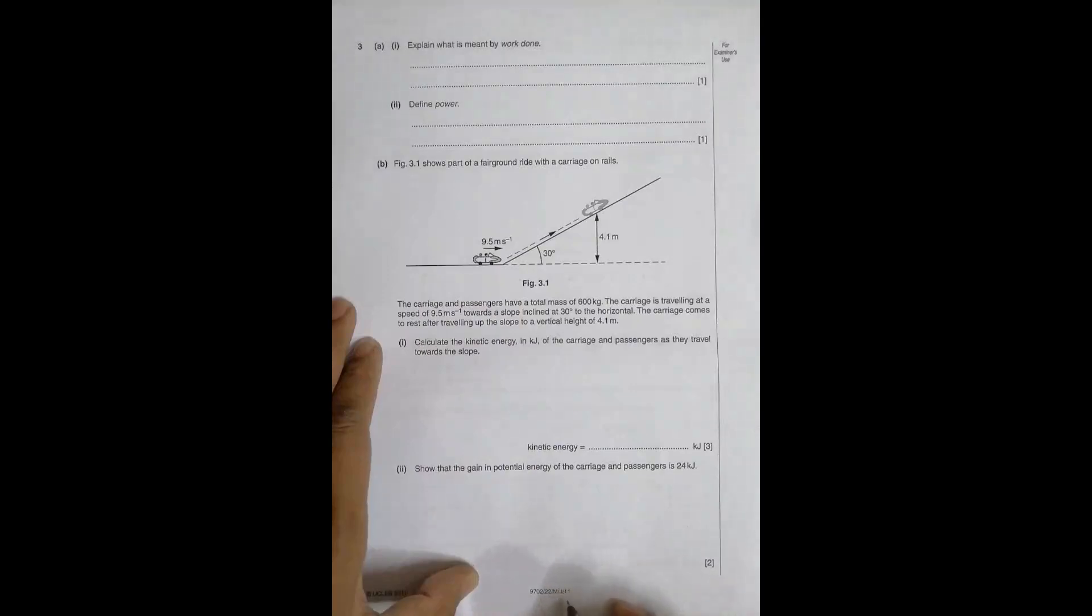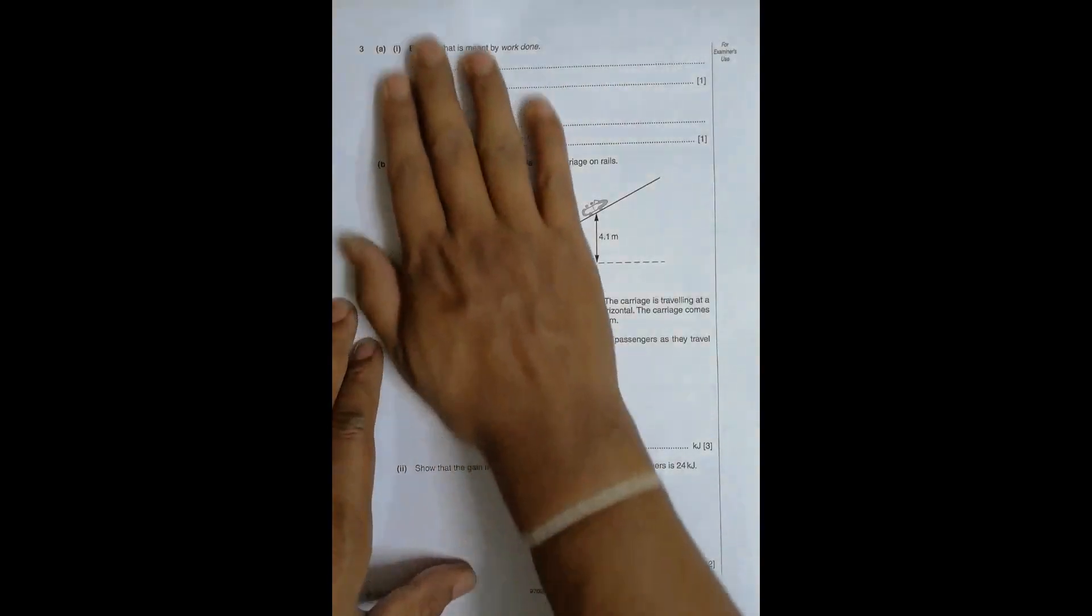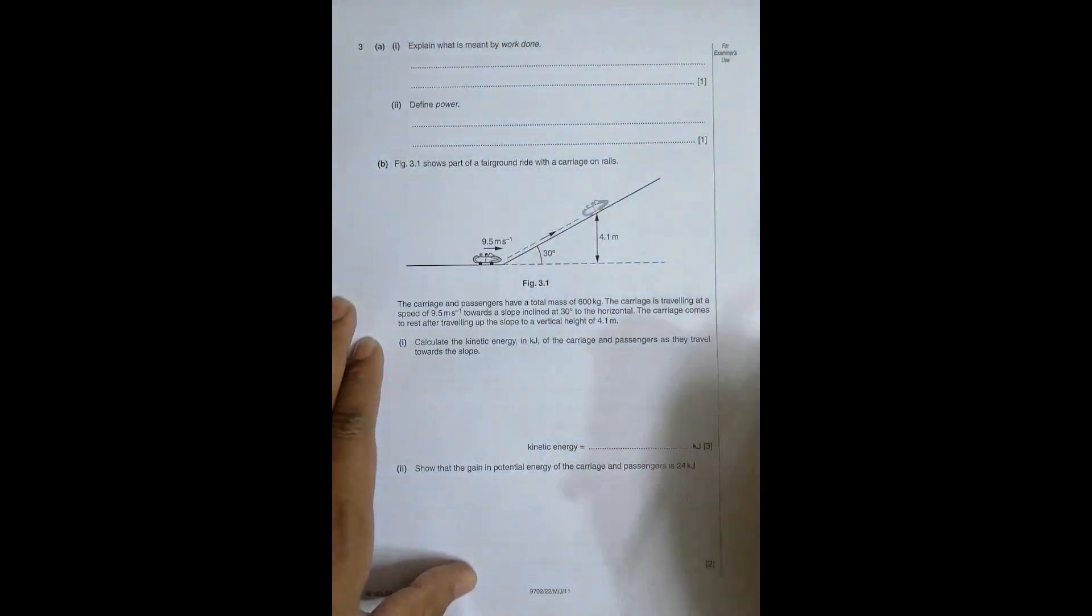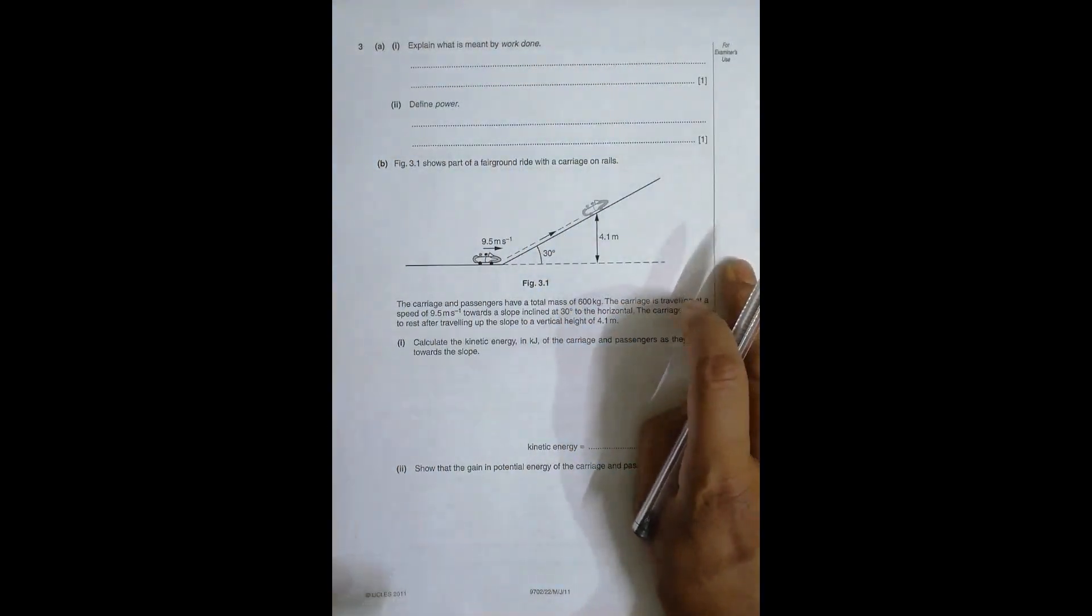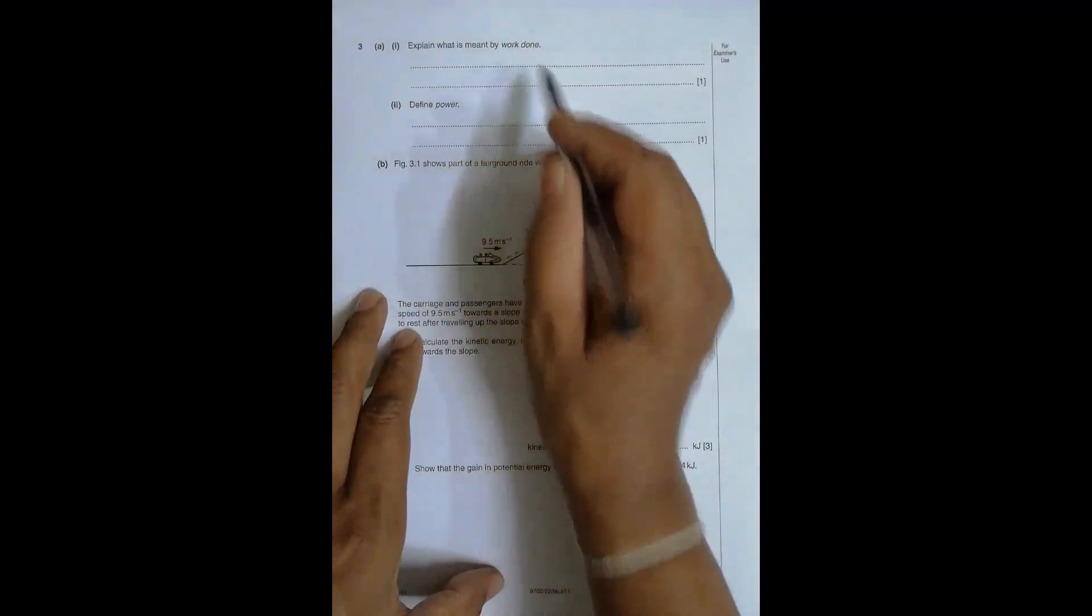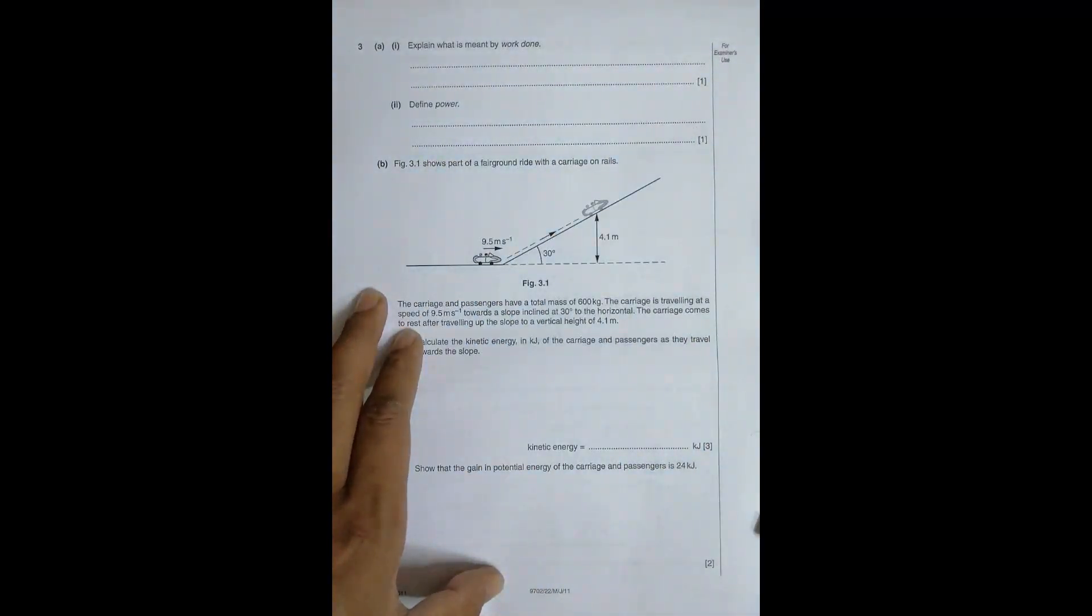Hello folks, this is a 2011 May/June Paper 22, and the question number is 3. This question is concerned with the chapter work, energy, and power, as you can see from these first two questions.